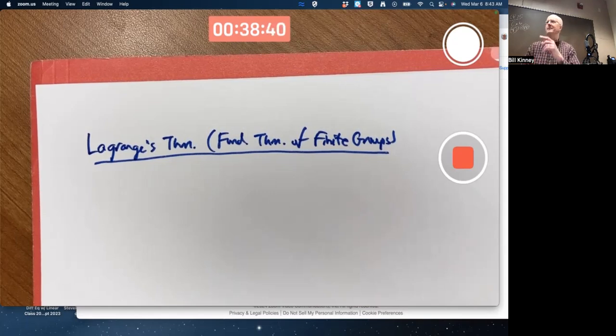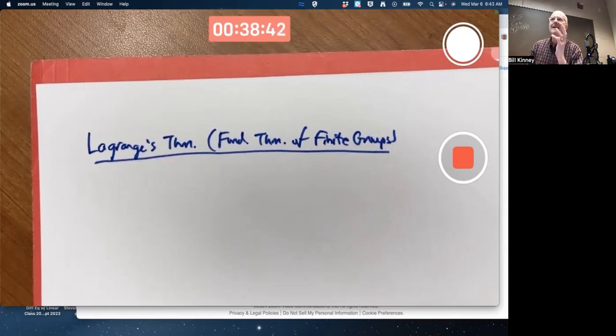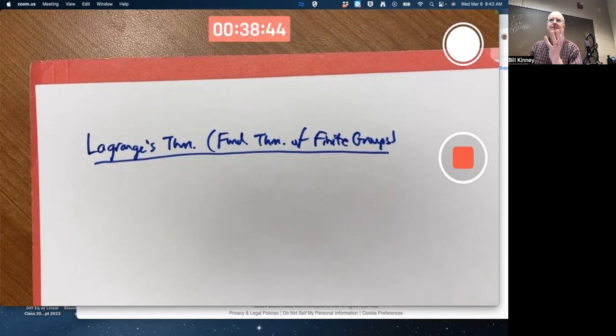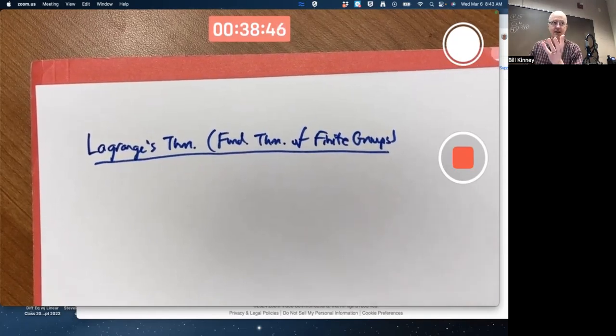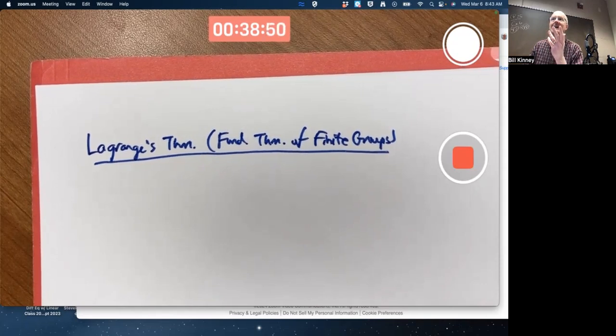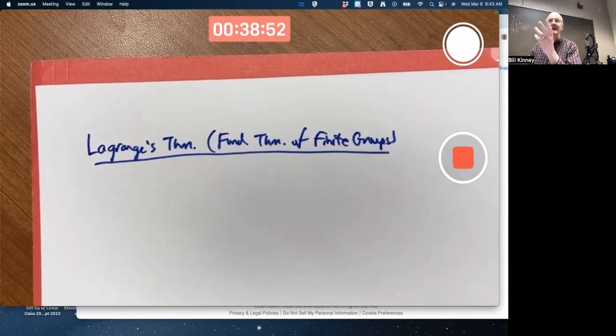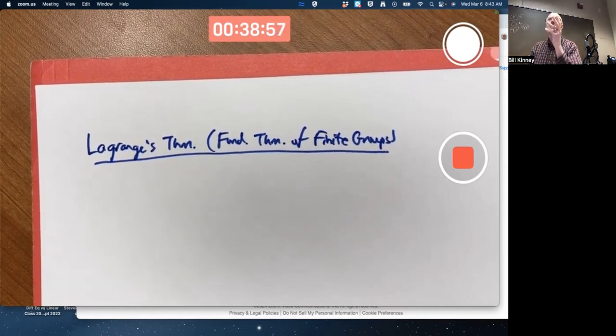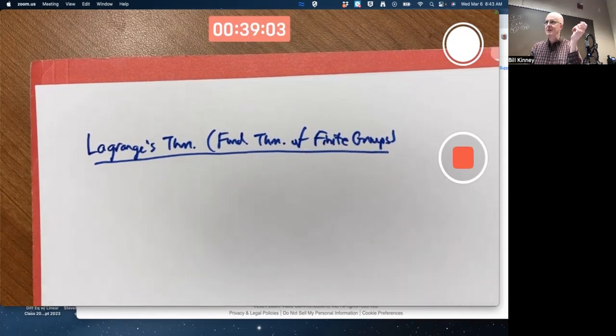What does the fundamental theorem of cyclic groups say? It says a lot. If G is a cyclic group, a finite cyclic group, then it's got exactly one subgroup, a unique subgroup, for each number of order equal to each number that divides the order of the original group.